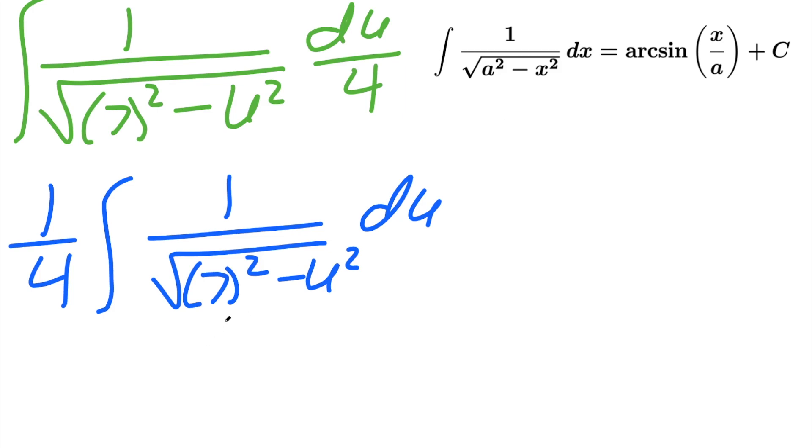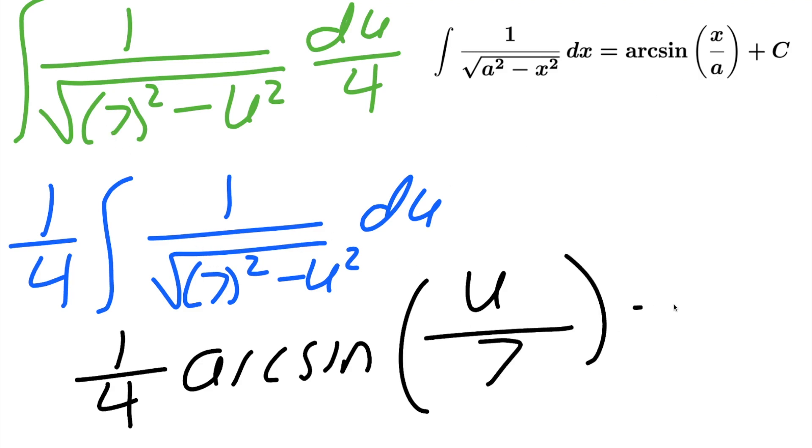Now we just have to apply this formula. So we have a 1 fourth in the front, so we'll keep it in the front 1 fourth. We'll put arc sine, so arc sine, parentheses, x divided by a. In our case, our x is like u, so u divided by a. And a in our case is 7, close parentheses, plus c.